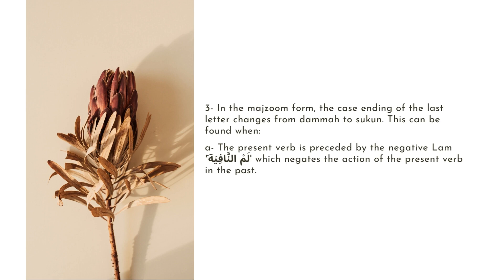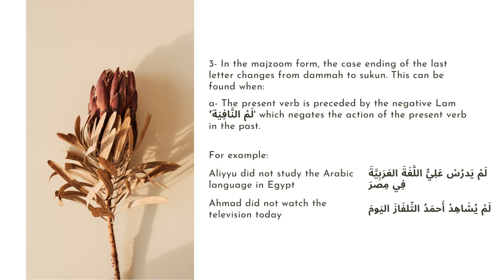This negates the action of the present verb in the past. For example, when we say, 'Lam yadrus Ali logat al-arabiyya fi misr' — Ali did not study the Arabic language in Egypt. Yadrusia is our present verb, in the majzum form, that is, carrying a sukun at the end. Another example: 'Lam yushahid Ahmad uttilfazal yom' — Ahmad did not watch the television today. Yushahid is our present verb, in the majzum form, carrying a sukun.